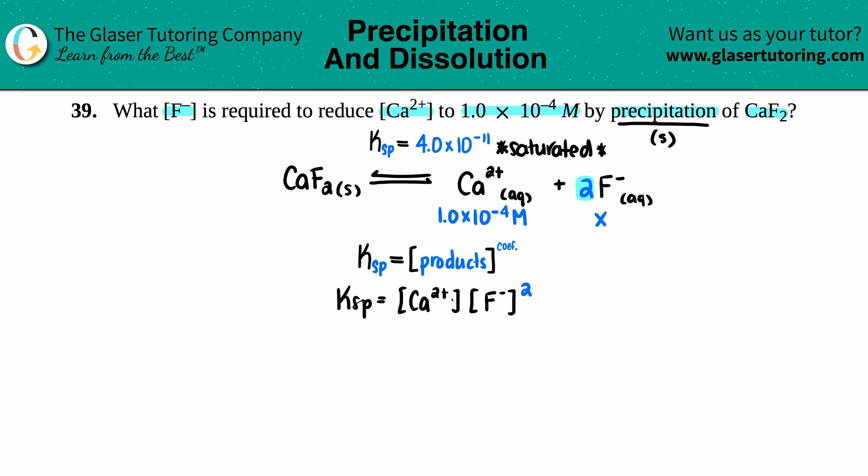We could put a 1 here for the calcium, but you don't have to do that. The F- we said was x, calcium was 1.0 × 10^-4, and the Ksp was what we looked in the back of the textbook: 4.0 × 10^-11.